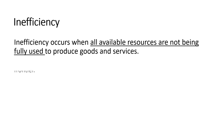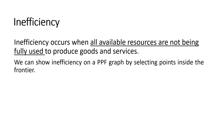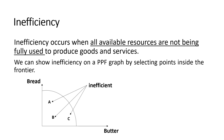We can show inefficiency on a PPF graph by selecting points inside the frontier. For example, points A, B and C are inefficient points because at these points we are not using all available resources to produce bread and butter.